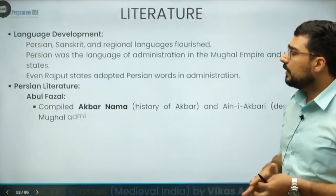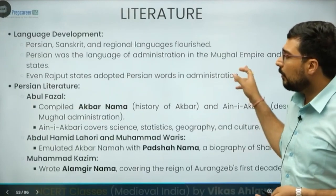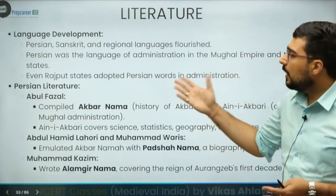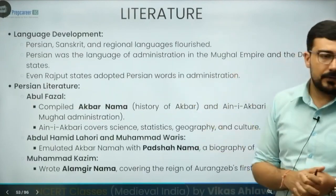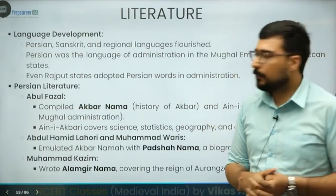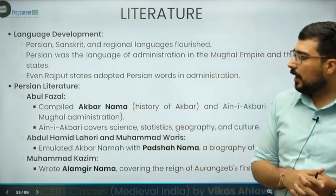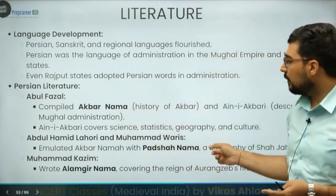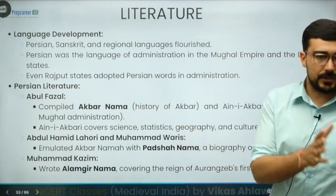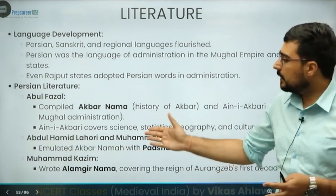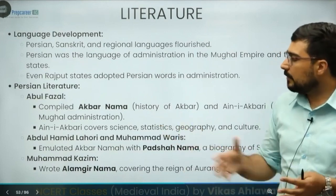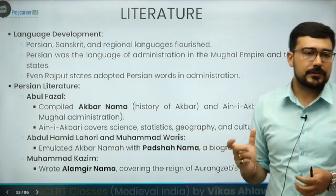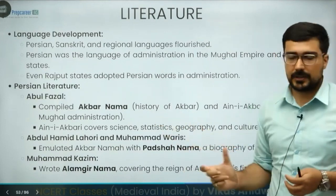Then literature — there was a lot of progress during this time. Akbar Nama was written by Abul Fazl. Abdul Hamid Lahori has written Padshahnama, which belongs to the reign of Shah Jahan. Then we see Muhammad Kazim, who has written Alamgirnama covering the initial phase of Aurangzeb.